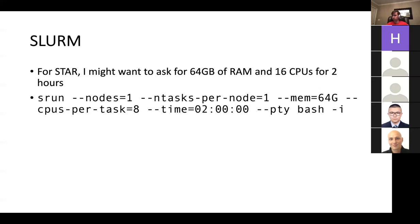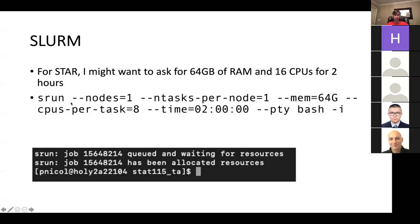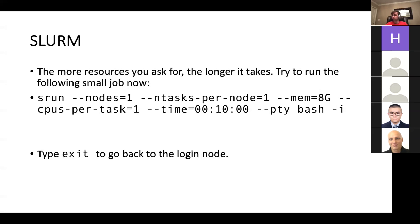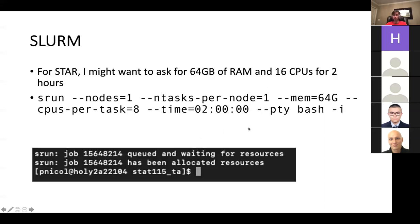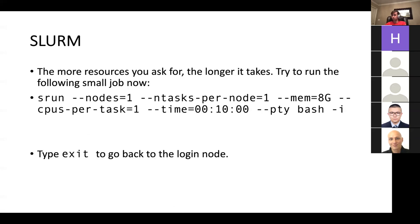So if you type this in and press enter, first you'll see srun — this job has been queued and it's waiting for resources. Next, it gets allocated the resources, and then all of a sudden you have this new ID for what node you're on. It says 'holy', which stands for Holy Oak, and it's not a login node — you've successfully gone to the compute node. This can take a moment or two. For those of you on Canon right now, I was hoping you could try putting in this job, which is a very tiny job — it's only asking for eight gigabytes of RAM for 10 minutes.